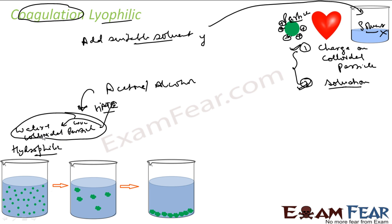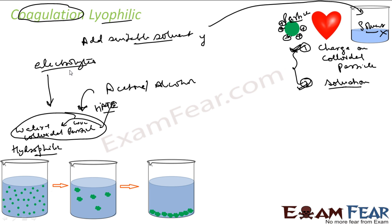The moment you add acetone or alcohol to this hydrophilic sol, dehydration of the dispersed phase occurs very easily. Under this condition, if you also add electrolytes on top of that, you get rid of all the charge — done deal, it will coagulate. So to bring coagulation in lyophilic substances, there are two things involved. You have to take care of both: remove the charge using electrolytes, and remove solvation by adding a suitable solvent.